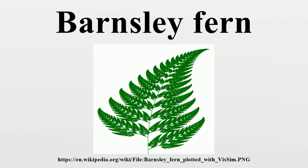Though Barnsley's fern could in theory be plotted by hand with a pen and graph paper, the number of iterations necessary runs into the tens of thousands, which makes use of a computer practically mandatory. Many different computer models of Barnsley's fern are popular with contemporary mathematicians. As long as the math is programmed correctly using Barnsley's matrix of constants, the same fern shape will be produced. The first point drawn is at the origin, and then new points are iteratively computed by randomly applying one of the following four coordinate transformations.